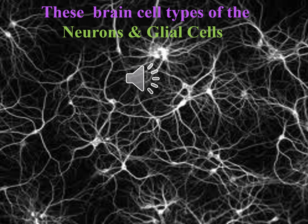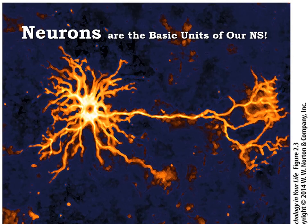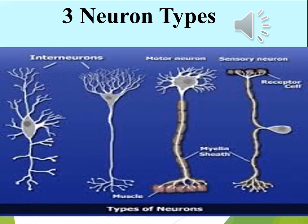Now let's consider the two major types of cells found in our brain: the neurons, which we'll spend a lot of time on, and the glial cells, which we'll spend very little time on. On the next slide we'll consider the basic parts of the neuron, but first, let's look at the three basic neuron types.